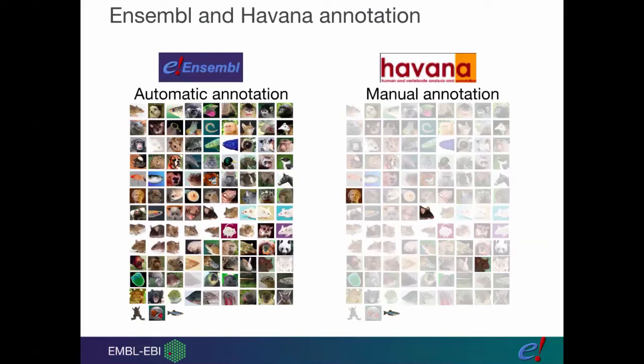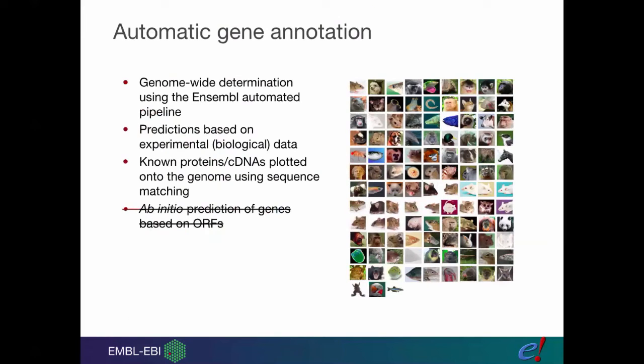The automatic annotation we do for every single species in our database, whereas the manual annotation is just done for this small select group. The automatic annotation is done genome-wide. We have a pipeline that takes known proteins and cDNA. These are real biological sequences that people have identified, and we use sequence matching to plot them onto the genome.